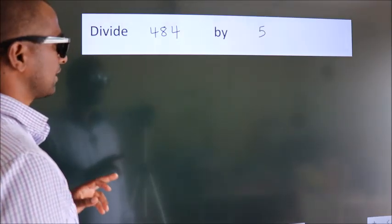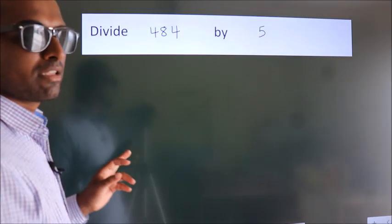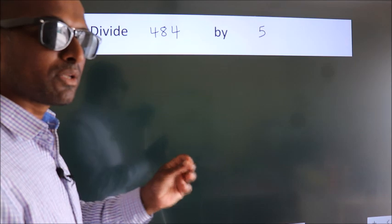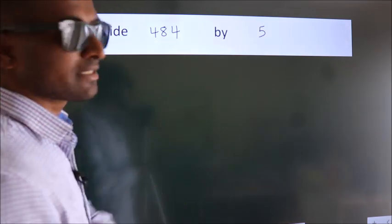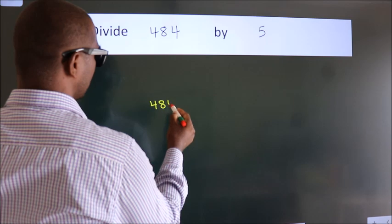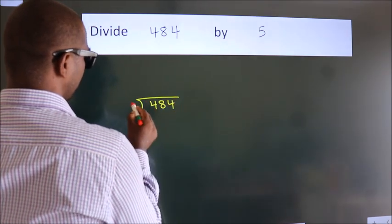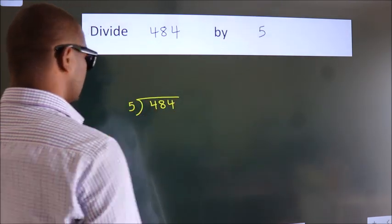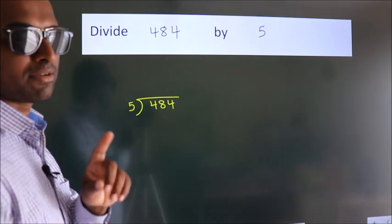Divide 484 by 5. To do this division, we should frame it in this way: 484 here, 5 here. This is step 1.